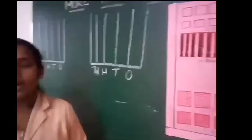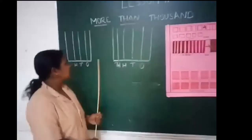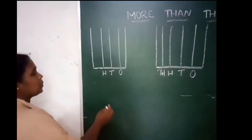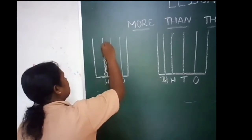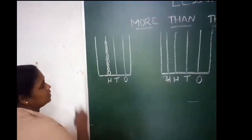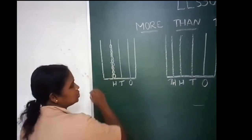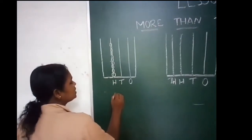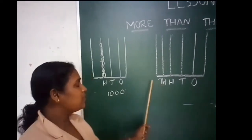You studied the number up to thousand. Next, you have to study the number from thousand. How can we represent thousand using an Abacus? For hundreds, we need three lines — ones, tens, hundreds. And to represent thousand, we need ten beads in the hundreds position. So ten beads in hundreds equals one thousand.